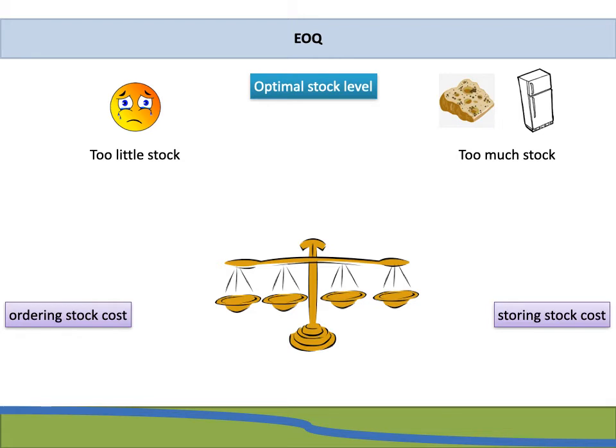We have to find that balance where we have the correct stock level - where we don't run out of stock but also don't have too much. In that same sense, we are able to balance our costs of ordering stock and storing stock so that we're at the best financial level in terms of how much we are spending on stock.